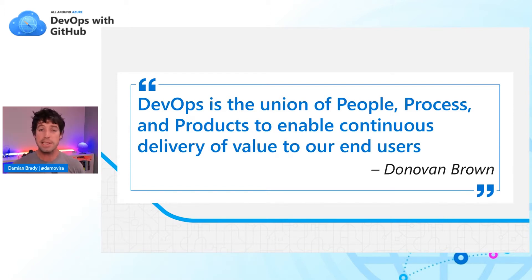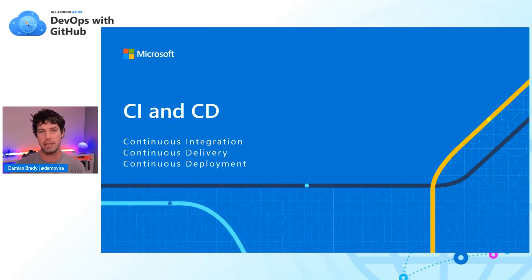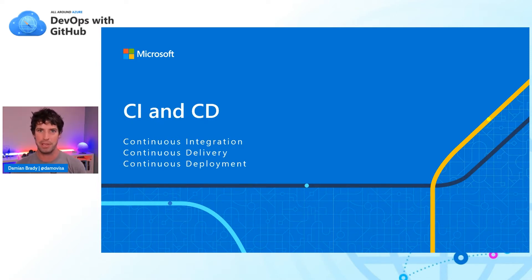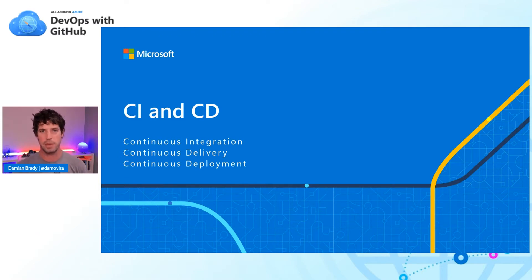A lot of people when first starting out with DevOps go straight to automation, which is only part of it. You'll notice this is the fourth session where we're talking about CI/CD. There's a lot of important stuff with DevOps, but this is obviously one of the steps we need to get everything working. So let's talk about CI/CD just to level set what they actually mean.